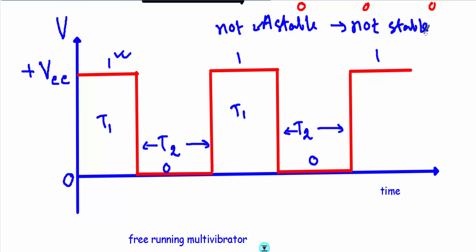This is called a free running multivibrator because for the transition from one to zero or zero to one — that means for the transition between levels — we don't have to apply any external voltage. That's why this is called a free running multivibrator circuit.